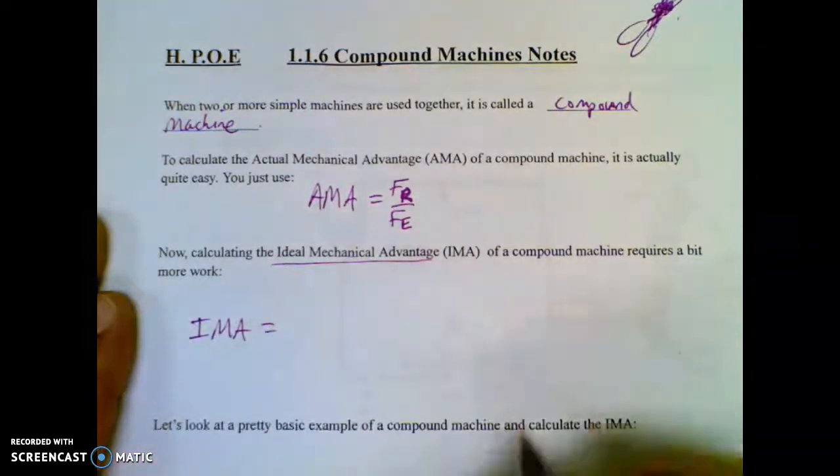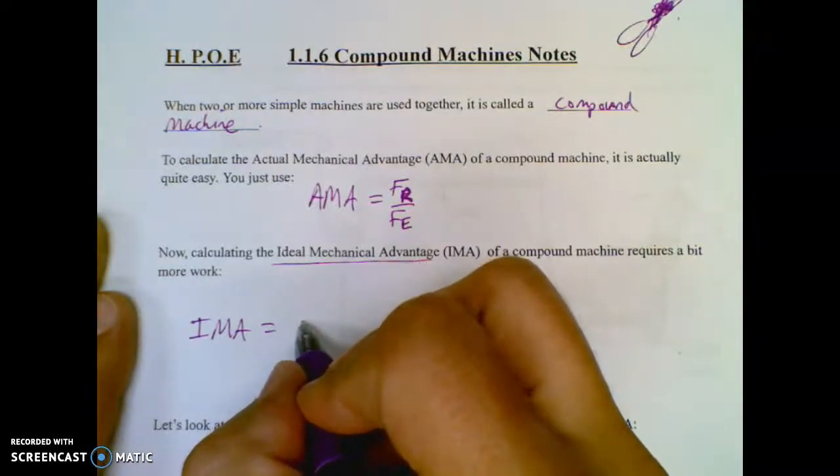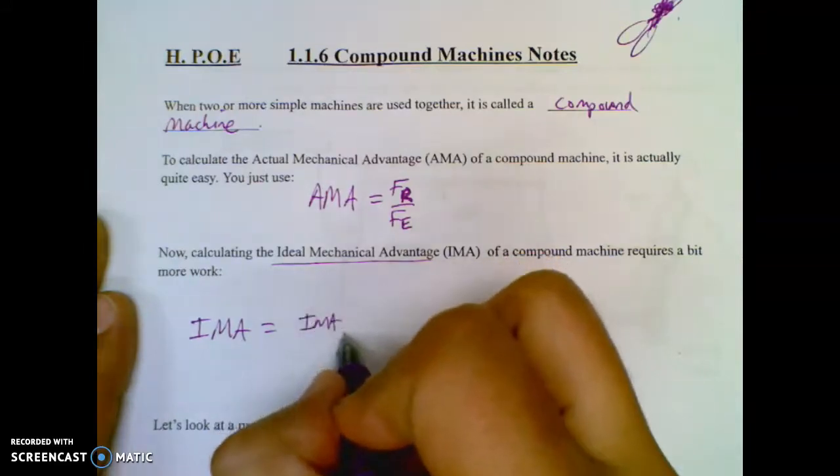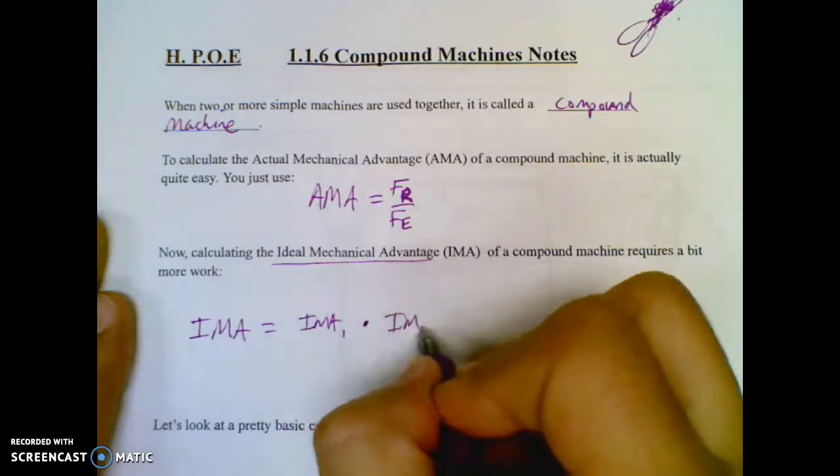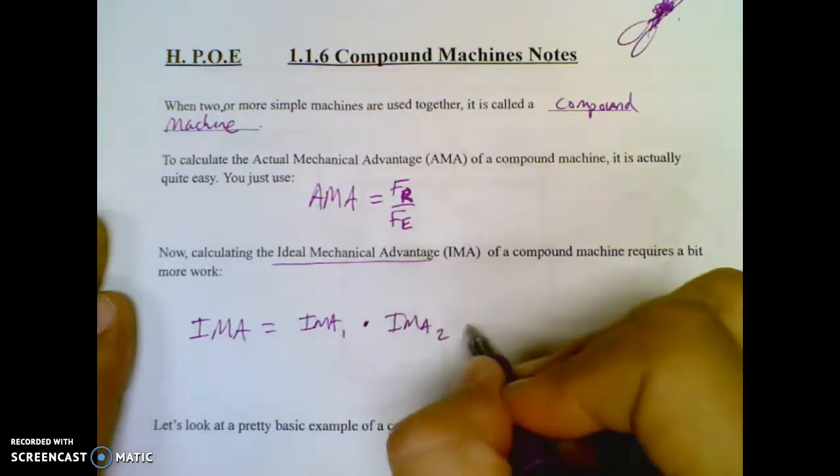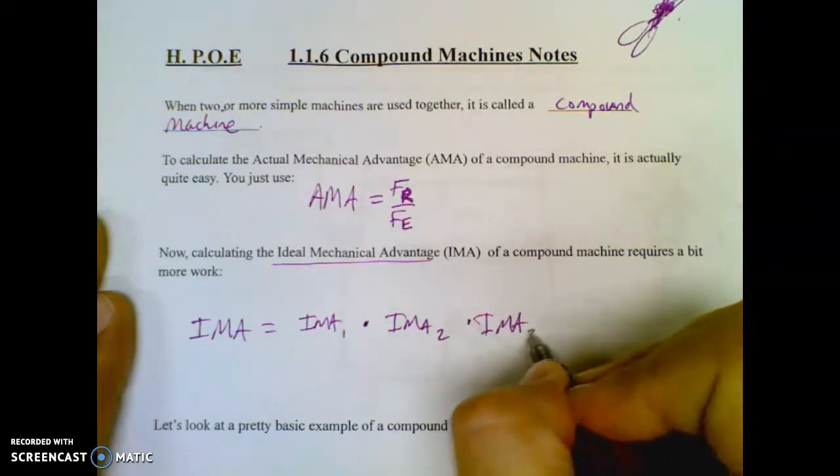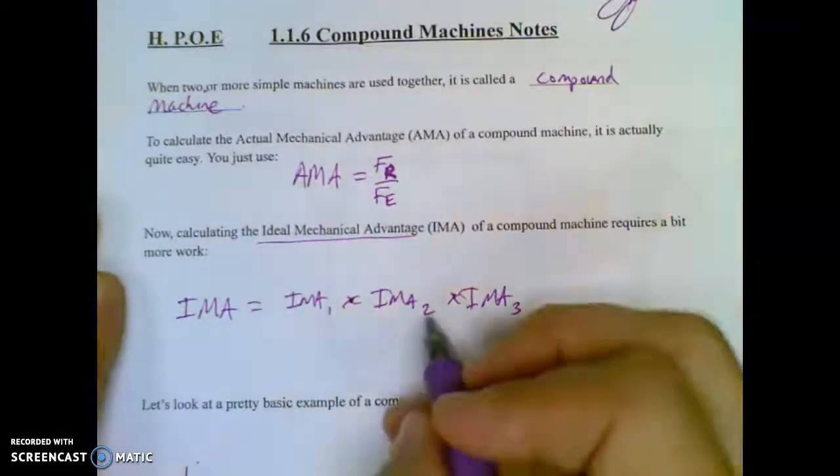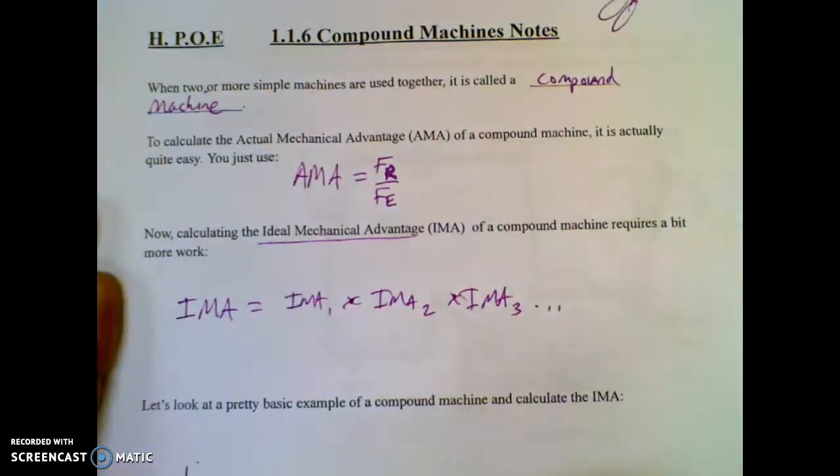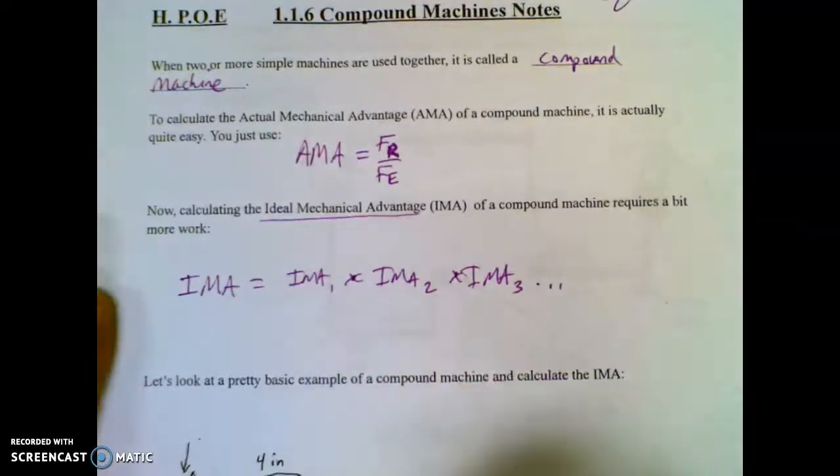Think about it: if you have more than one machine, you have the IMA of the first machine and you have to multiply that by the IMA of the second machine. And if there's a third machine, you have to do the IMA of the third machine and you're multiplying every single time. However many machines you have, you have to find each one of their mechanical advantages and multiply them together.